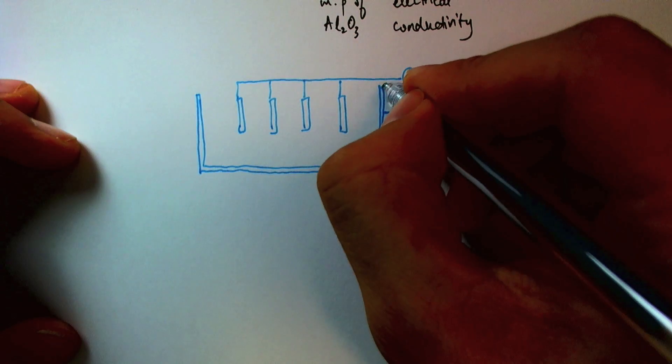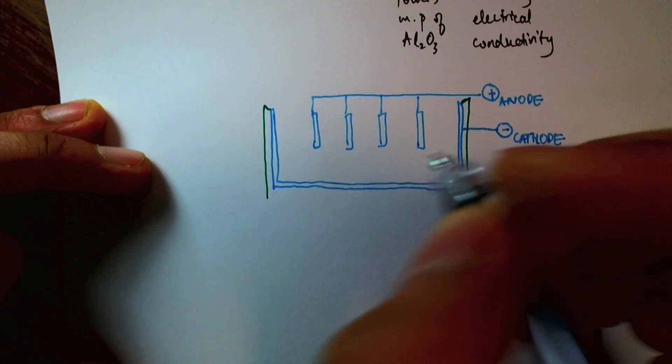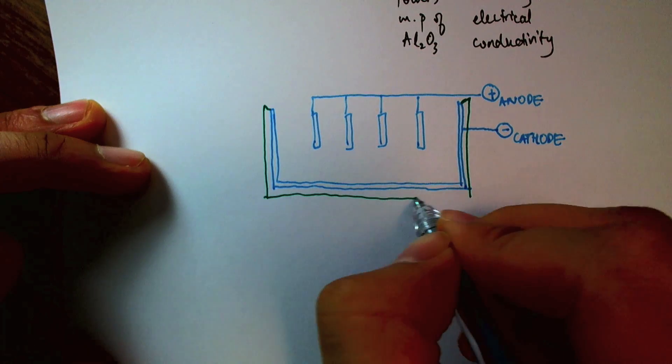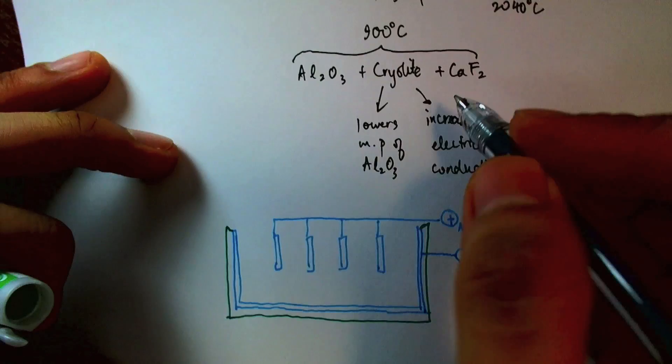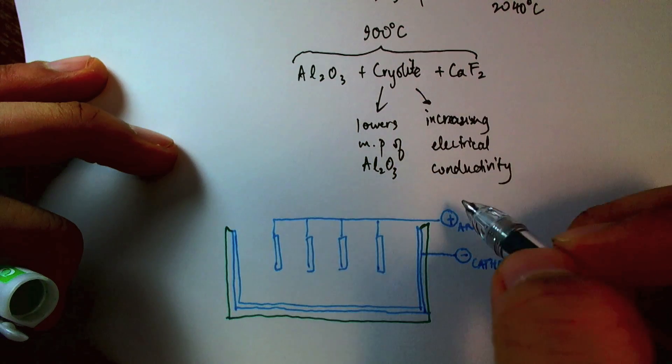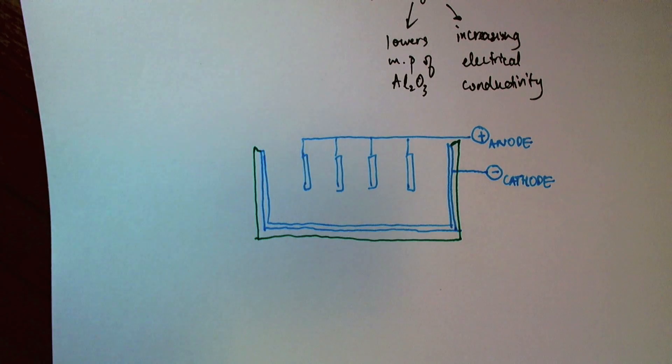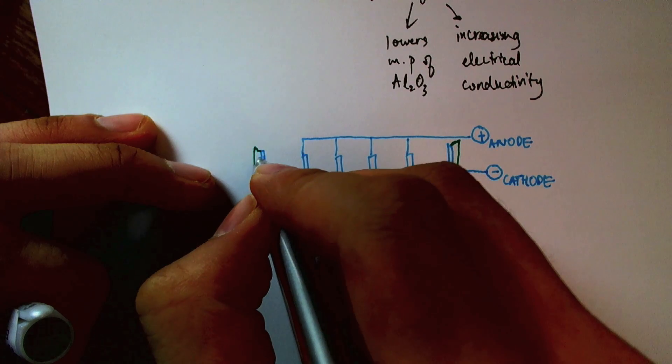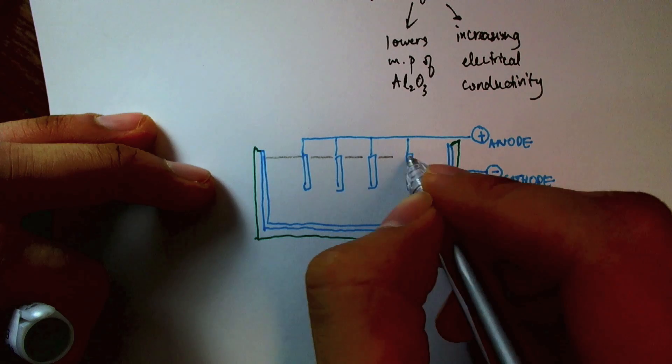Now, of course, I have to put this in the tank. So I have my electrodes all set up, and now I'll pour this mixture of aluminum oxide, cryolite, and calcium fluoride into the tank. So I'll fill it up here and pour all of this in.